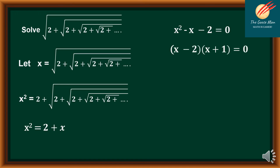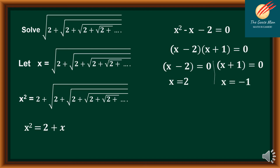We have (x minus 2) times (x plus 1) is equal to 0. By the zero product property, x minus 2 is equal to 0, or x plus 1 is equal to 0. Solving for x, we have x is equal to 2 on the left side, and x is equal to negative 1 on the right side.